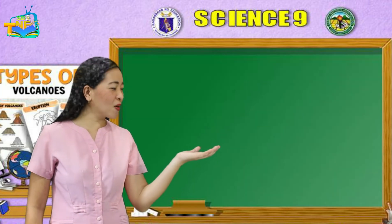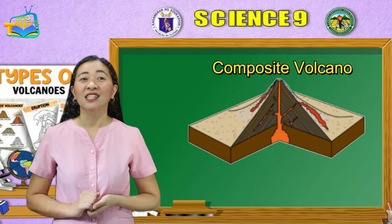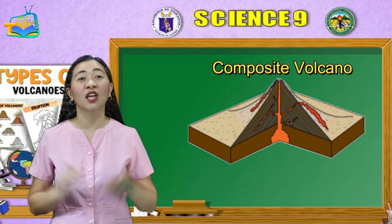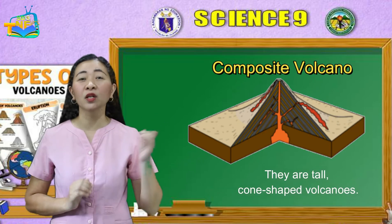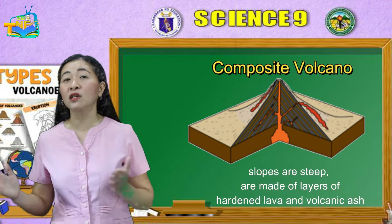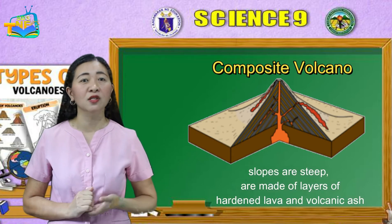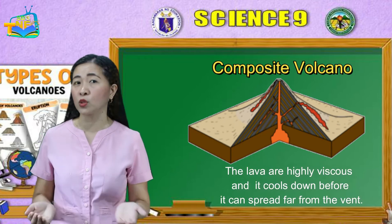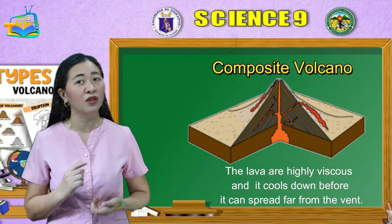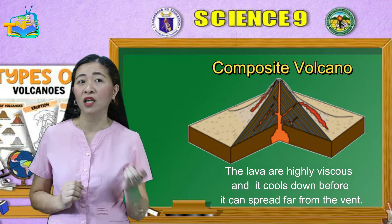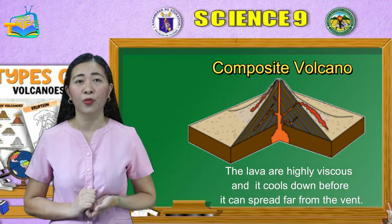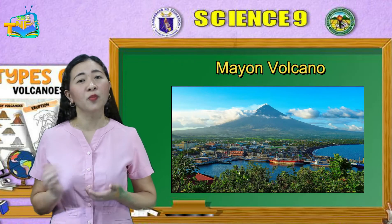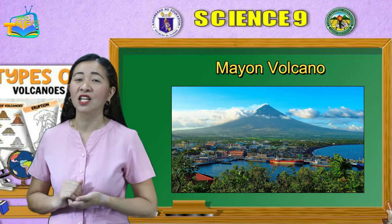Third, composite volcanoes, also known as stratovolcanoes. They are tall, cone-shaped volcanoes. The slopes are steep and are made of layers of hardened lava and volcanic ash. The lava that flows from stratovolcanoes is highly viscous, which is why it cools down before it can spread far from the vent. Mayon is an active composite volcano located in Albay.